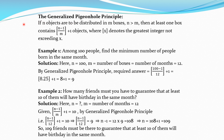Now next is Generalized Pigeon Hole Principle. If n objects are to be distributed in m boxes where n is greater than m, then at least one box contains the integral part of (n-1)/m plus 1 objects, where this notation denotes the greatest integer not exceeding x. It means we calculate (n-1)/m and consider the greatest integer not exceeding that value. So this is the Generalized Pigeon Hole Principle — if there are n objects distributed into m boxes where n is greater than m, then at least one box will contain this number of objects.